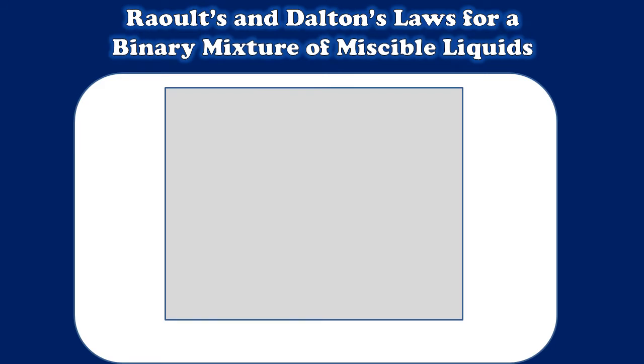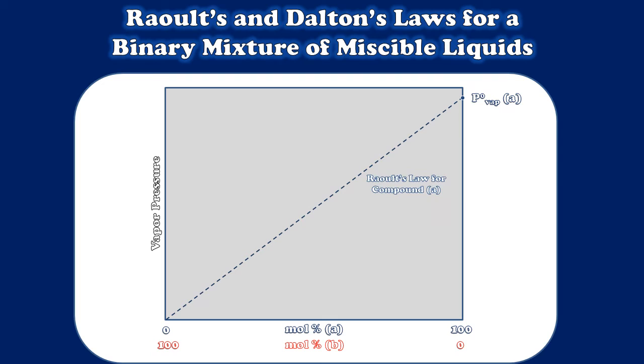Now remember that if we make a plot of vapor pressure versus composition for a mixture of miscible liquids, we can plot Raoult's law for each of the liquids which will have a zero intercept on one side and of course on the other side an intercept which corresponds to their vapor pressure when pure. And I can do this for both of the two compounds in my mixture, in this case just general A and B.